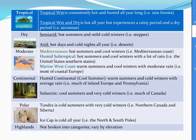Each of the six main categories has subcategories. In the tropical domain, you can have a tropical wet climate or tropical wet-and-dry. In both climates it is hot all year. A good example of the tropical wet climate is the rainforest. In tropical wet-and-dry areas, it is hot all year but there is a rainy period and a dry period — savannahs are good examples of this.